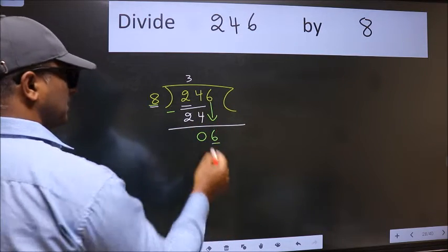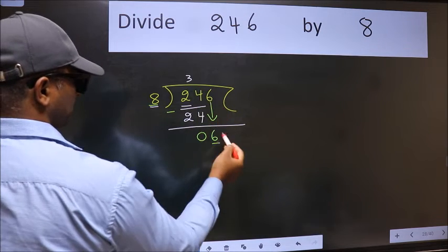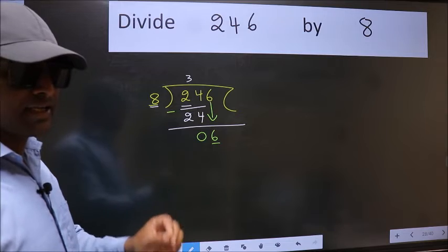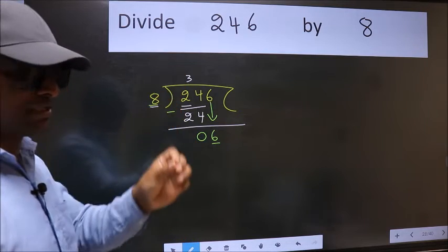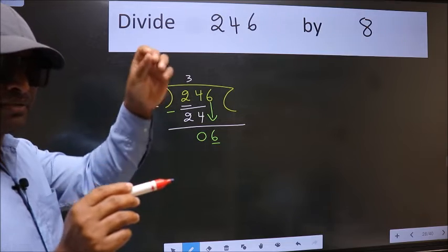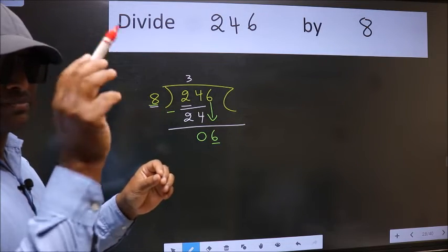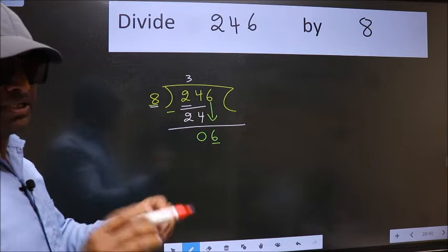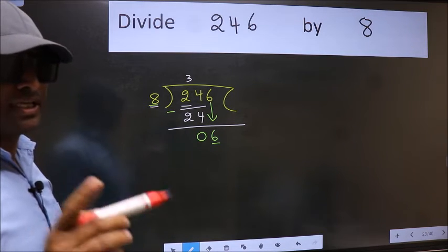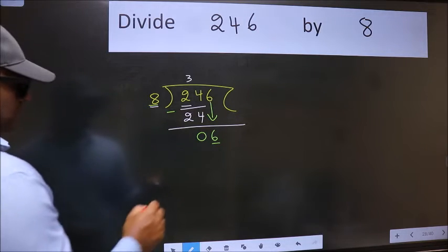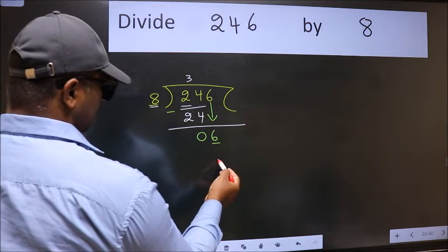I repeat: bring down the number and also put dot and take 0 both at the same step - you should not do this. Instead of that, what we should think of doing is: which number should we take here?